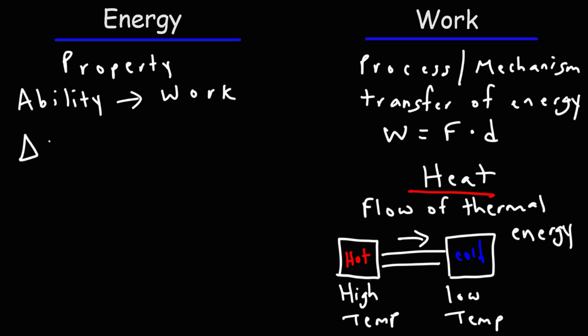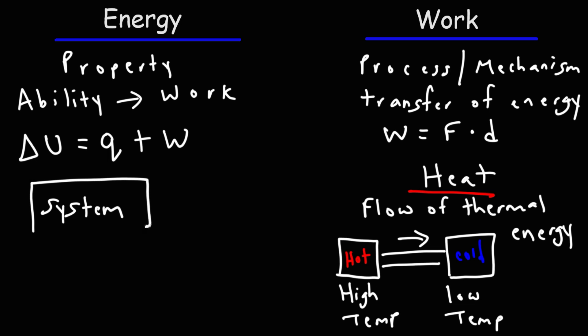There's something called internal energy in thermodynamics. Delta U is equal to Q plus W — that's the formula in chemistry; in physics it's Q minus W, and the perspective in which you define work is different. If you have a system and want to increase its internal energy, there are two common ways to do that. The first way is by adding heat to it. As heat flows into the system, the temperature goes up, the system gains thermal energy, and its total internal energy goes up as well.